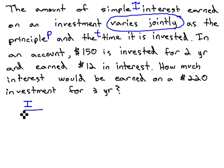Taking the first variable and dividing by the product of the other two, PT, will equal our constant.